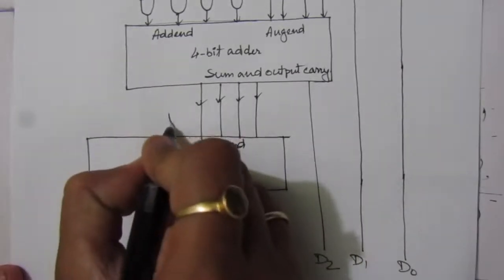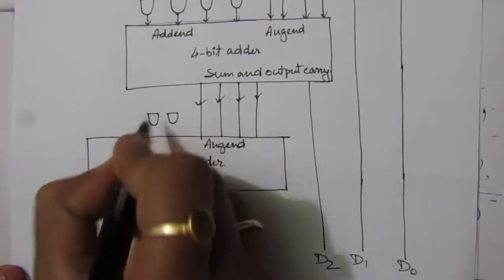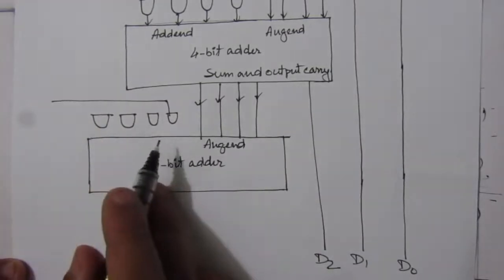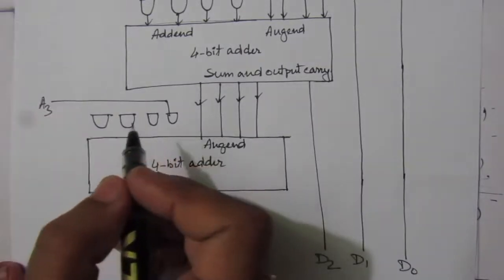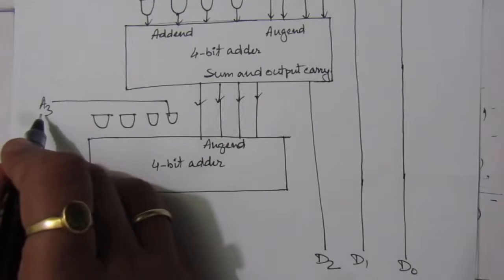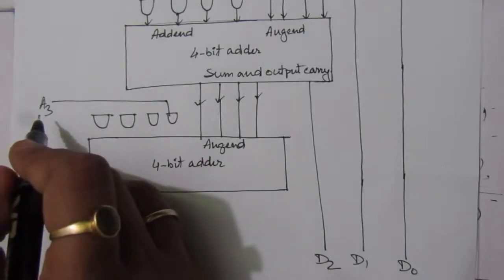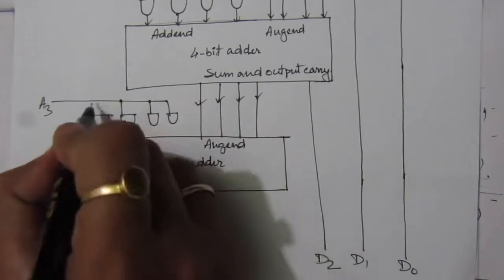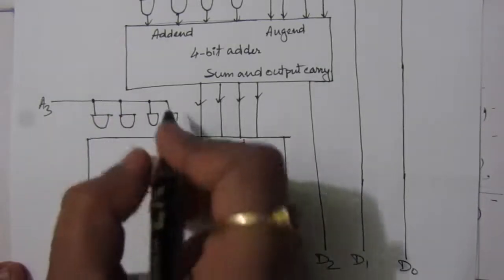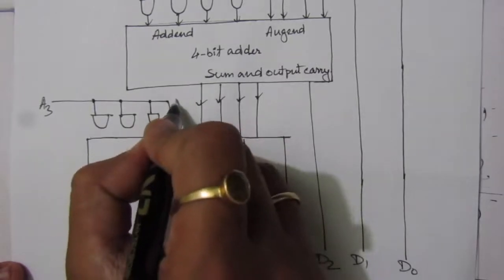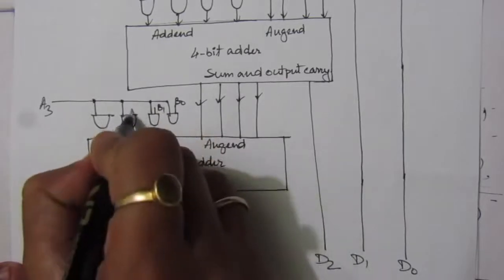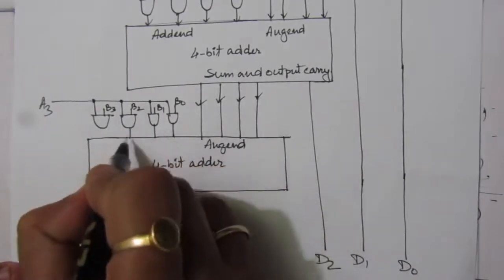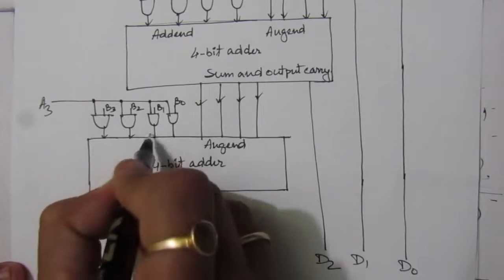Let us draw 4 AND gates. One input for each of these AND gates is a3, because we are designing a 4-bit by 4-bit multiplier, so we will also have a3. So a3, a2, a1, a0 will be multiplied with b3, b2, b1, and b0. This a3 is connected to one input of each of the AND gates, with the other inputs being b0, b1, b2, and b3. After this multiplication, these values will be the addend to this 4-bit adder.